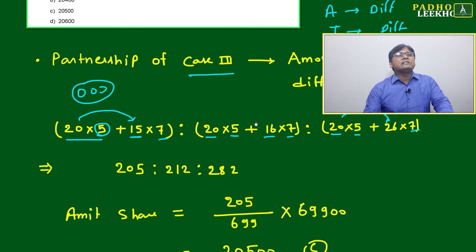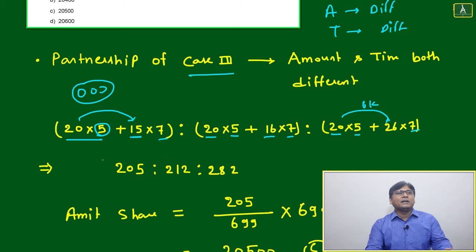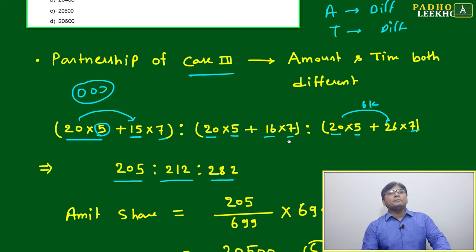This calculation part, you are very expert of Vedic math, no need to tell how to calculate. This is very easy. 205, 212, 282. That will be the ratio of profit sharing.